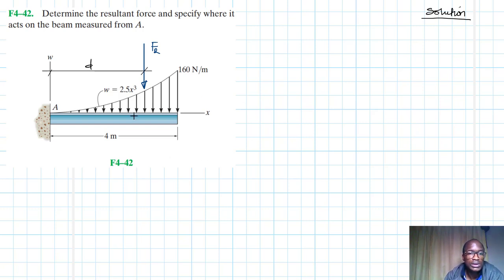Since this distributed loading is governed by this function, we need to sum up this area under this curve using principles of calculus, which is integration, and also work out the moment so that we find the location of FR. We'll do the same thing like we've done in the past. We are saying FR times d is going to be equal to the summation of moments about point A.